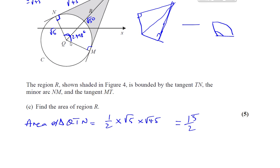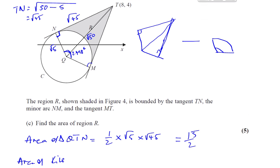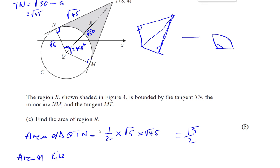And of course, the area of the kite, which is those whole two triangles together, is going to be the kite QMTN, which is 2 times 15 over 2, which is 15 square units.